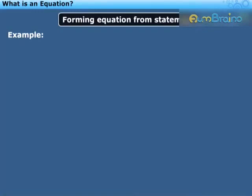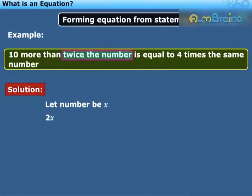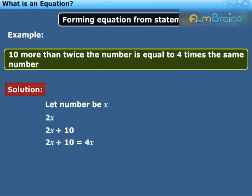Let us see a few examples of equations. We will now write the following statement in the form of an equation: 10 more than twice the number is equal to four times the same number. Let the number be x. Twice the number will be 2x. 10 more than twice the number is 2x plus 10.